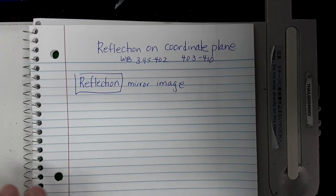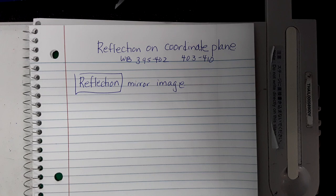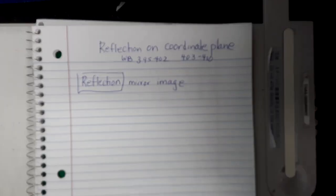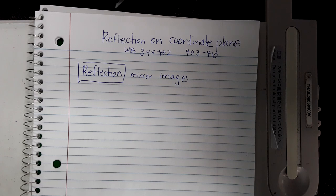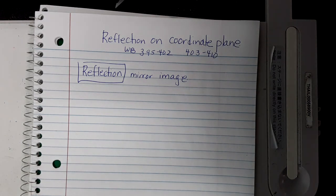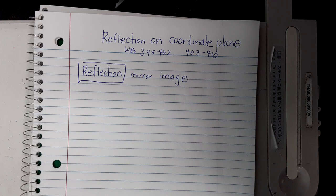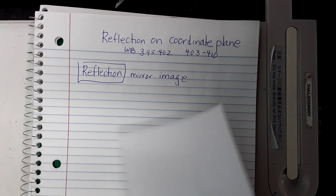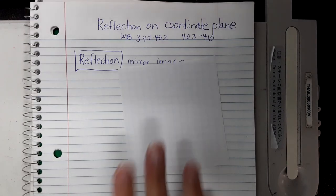I would like for you to find yourself a piece of graph paper. As we do this it's important that you do this. Find a piece of graph paper and cut out a small square. If you need to pause the video please do so. We're going to use that to graph some points and show reflection on the coordinate plane.